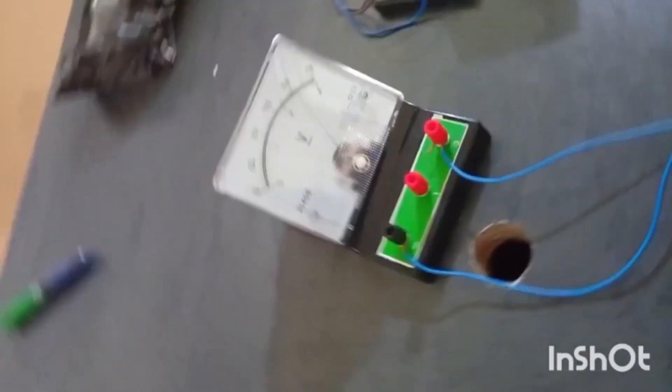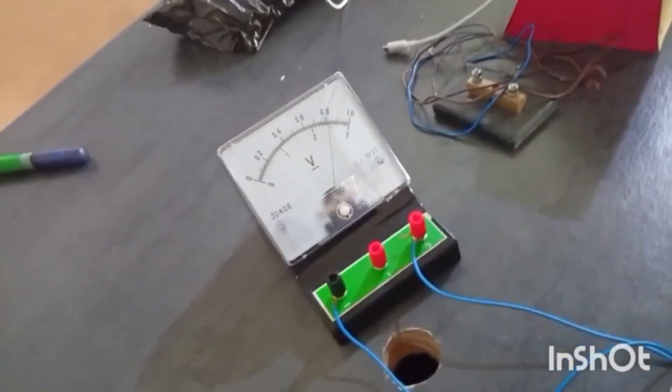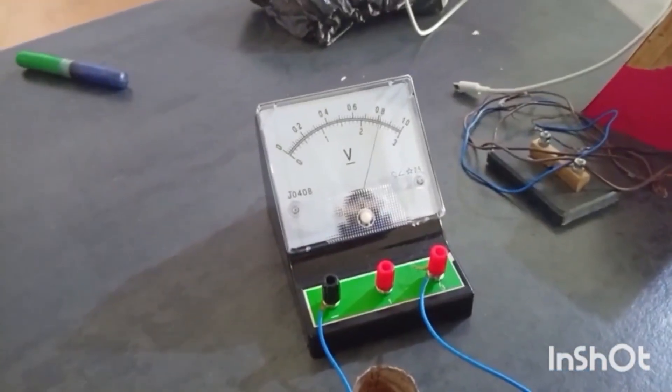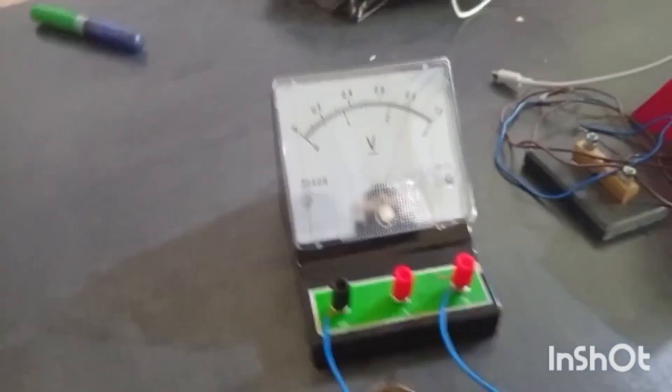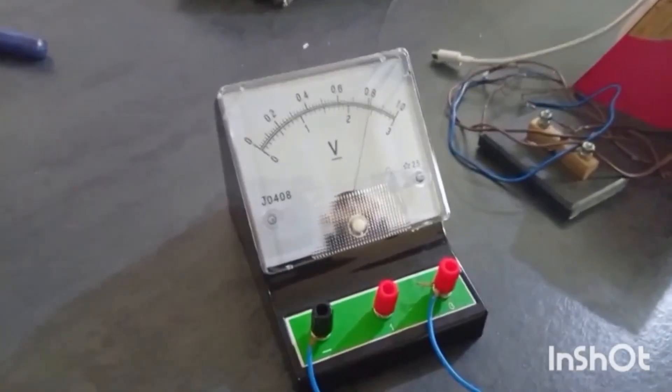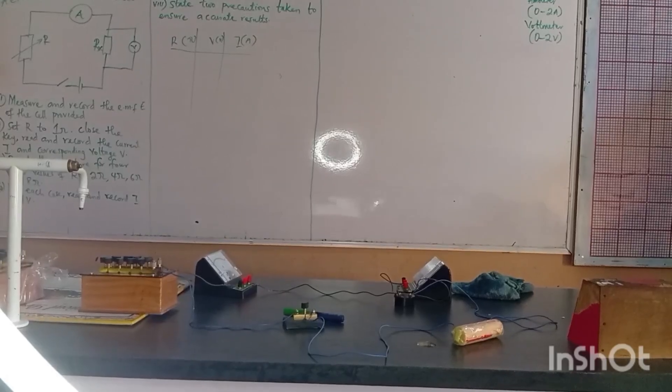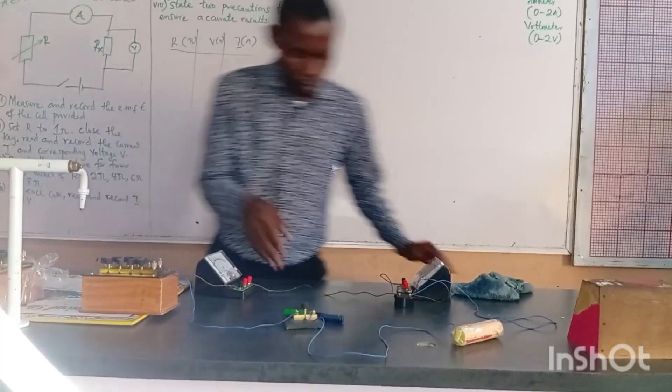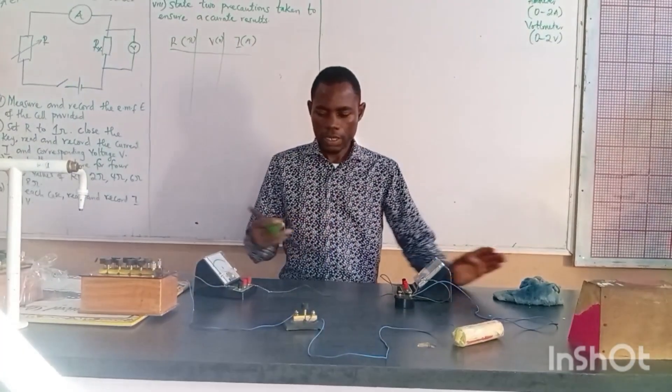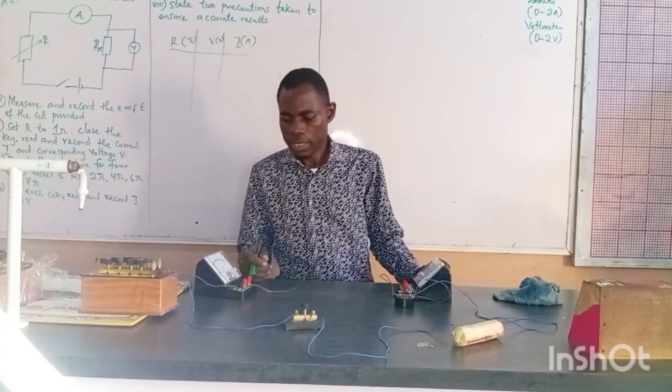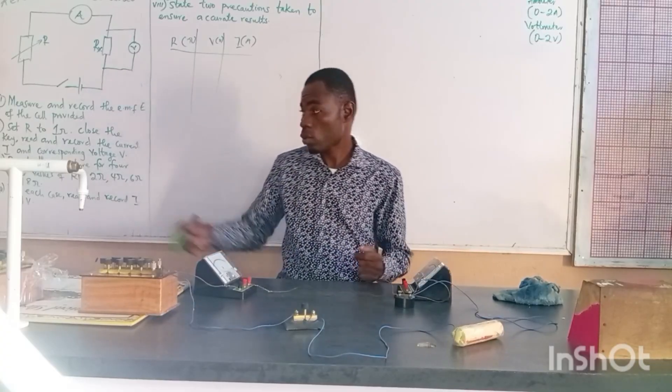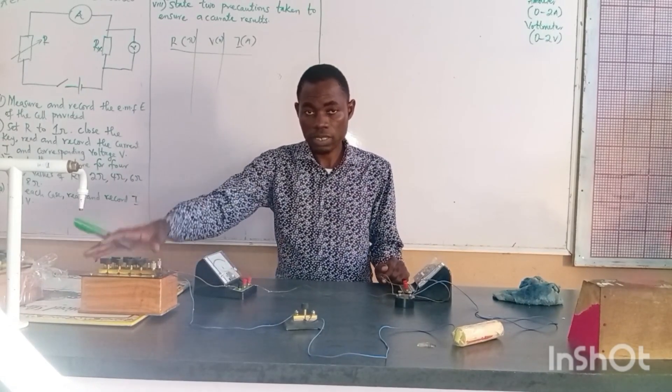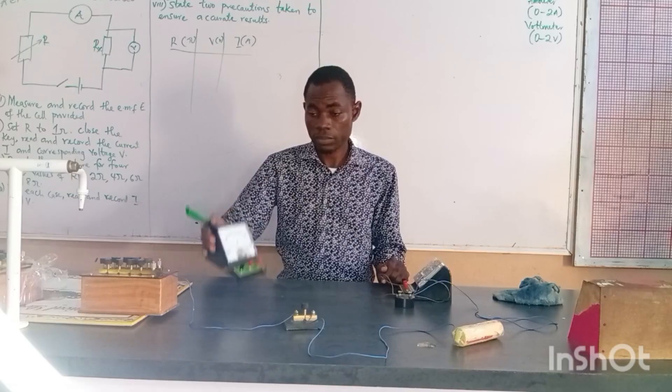Here is my cell and here is my voltmeter to record the EMF of the cell. We can see that the EMF of this cell I'm using is 2.5 volts. Now, like I said earlier, I will show you how I did the circuit diagram. Here I have my resistance box, here I have my ammeter.